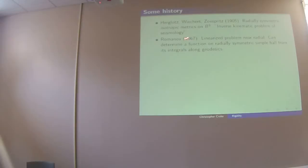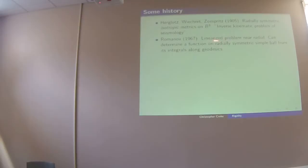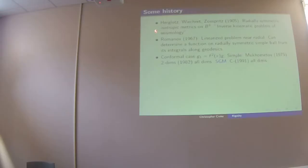There's a big jump, but the next thing is Romanov in 1967, who looked at the isotropic problem and linearized near the radially symmetric case. It amounts to the question: can you determine a function on a radially symmetric simple ball from its integrals along geodesics? And he proved that yes, you can. Then the conformal case: looking at isotropic metrics in general.